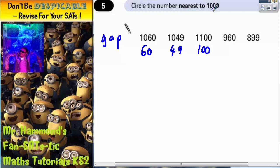960 is less than 1000. How many less? Well, we'd have to add an extra 40 to this to make it up to 1000, so that's a gap of 40.